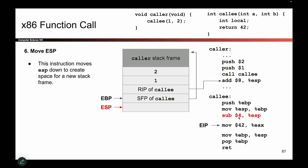A question you might have is: how did I decide this was four and not eight or 100? When the compiler changes C code into x86, it can think about how complicated the callee function is — how many local variables does it have, what computations does it have to do — and substitute the appropriate number. If it thinks callee is a super complicated function, it could put 100 or 200 here. But in this case it's a tiny, simple little function, so we put four. The compiler picks.